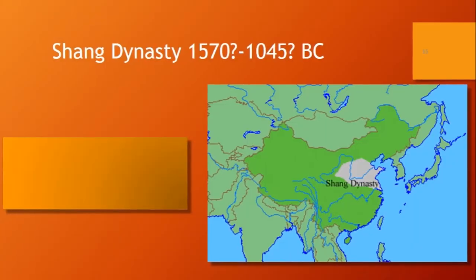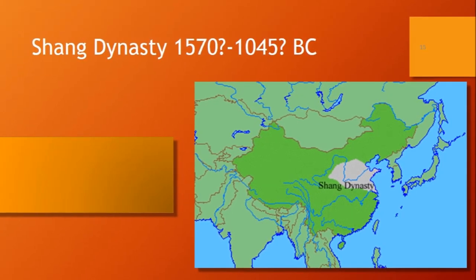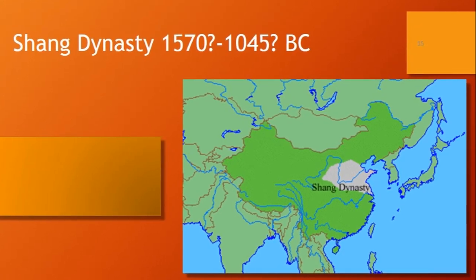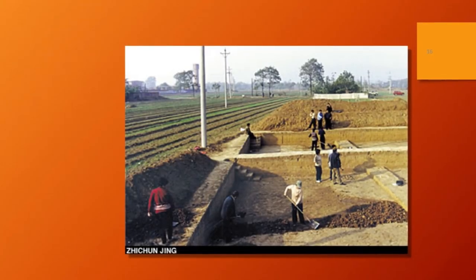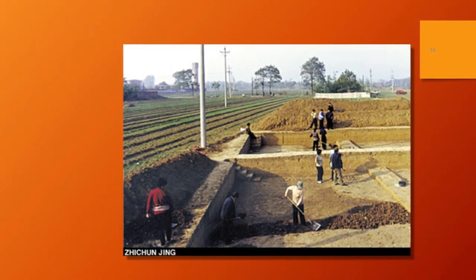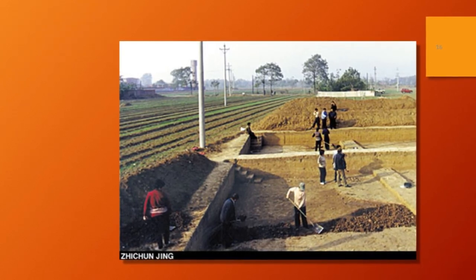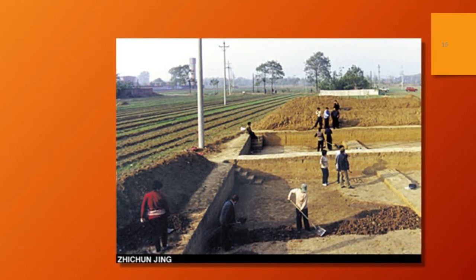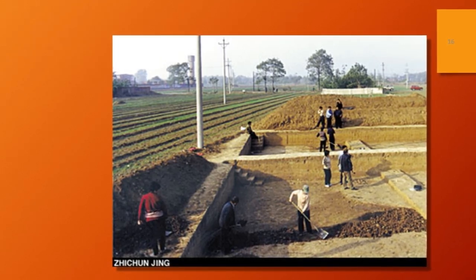Here's another map of China showing the extent of the Shang — look for the light brown within the darker green, which is the extent of China today. I also put in this image because it shows how difficult it can be to do archaeology when you've got a large population like China. On the left you've got agricultural fields, on the right people are doing archaeology — no doubt under those agricultural fields there is archaeological material.